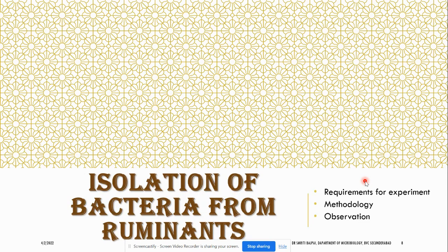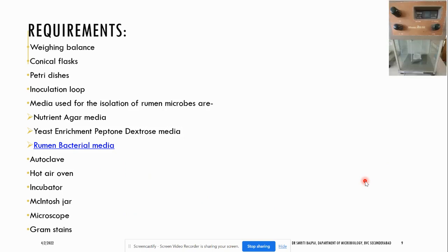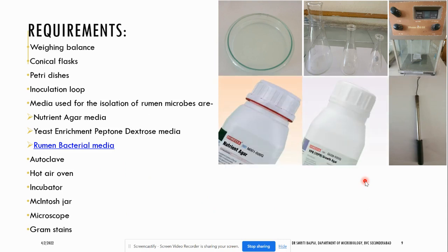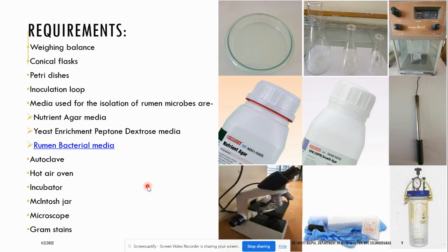Now we will see the isolation of bacteria from ruminants. The requirements for the experiment include a weighing balance, conical flasks, Petri dishes, inoculation loop, and specific media. Since these organisms require anaerobic conditions for cultivation, special media are needed: nutrient agar media, yeast extract peptone dextrose media (YEPD), and rumen bacterial media. We also need an autoclave, hot air oven, incubator, and McIntosh jar for the strictly anaerobic organisms.